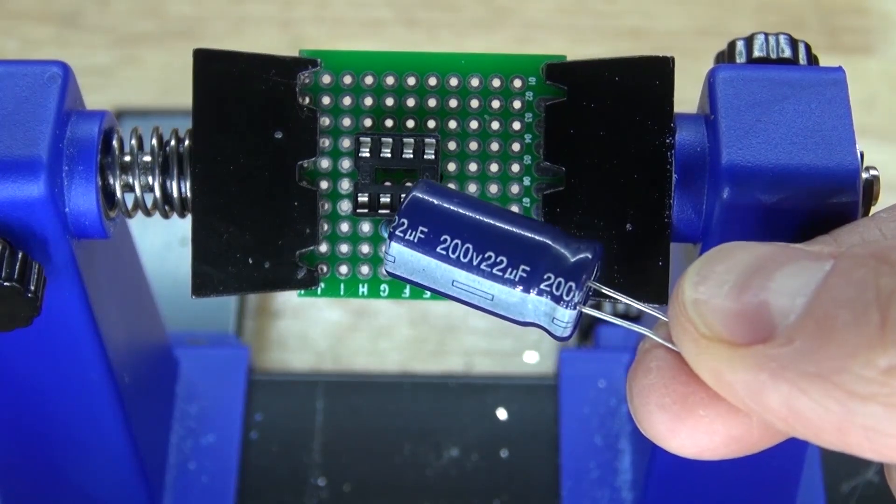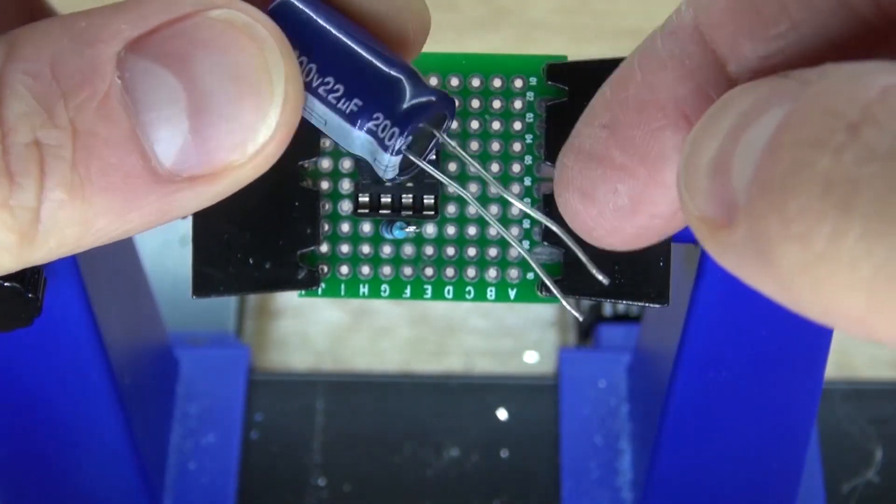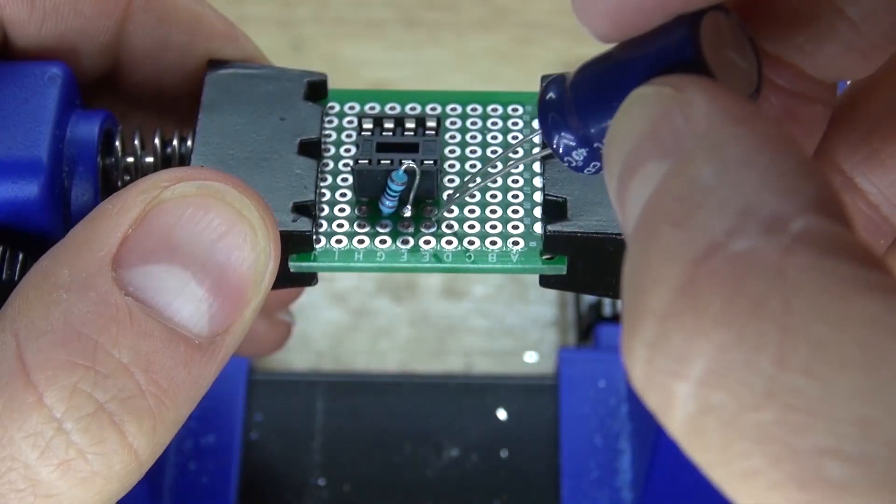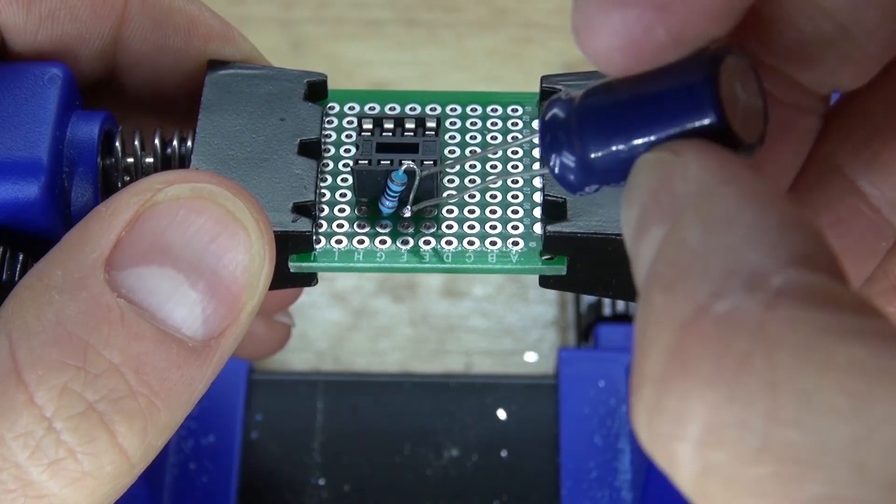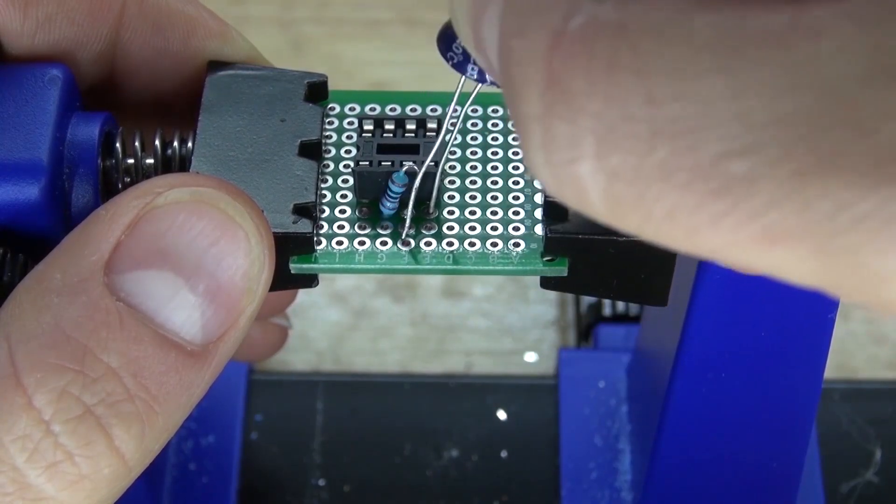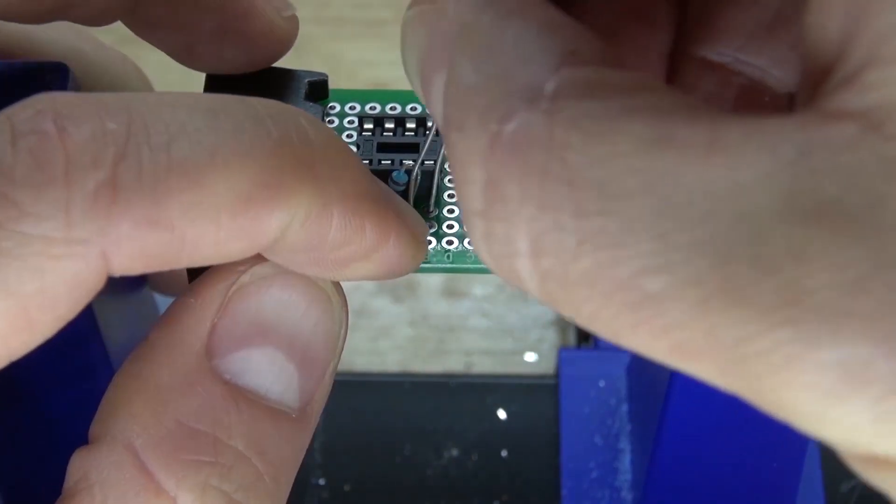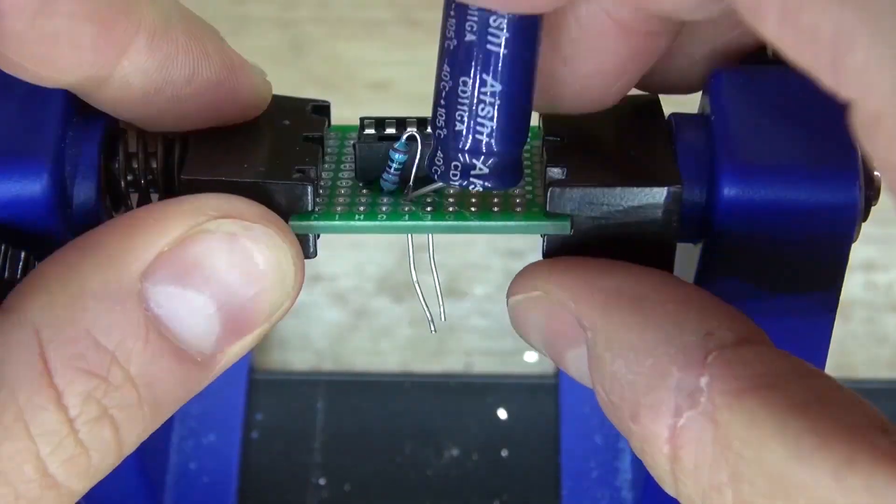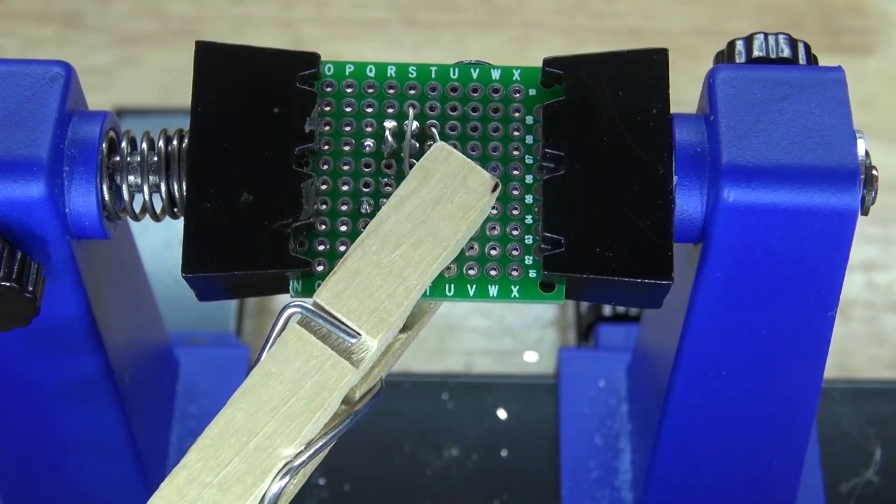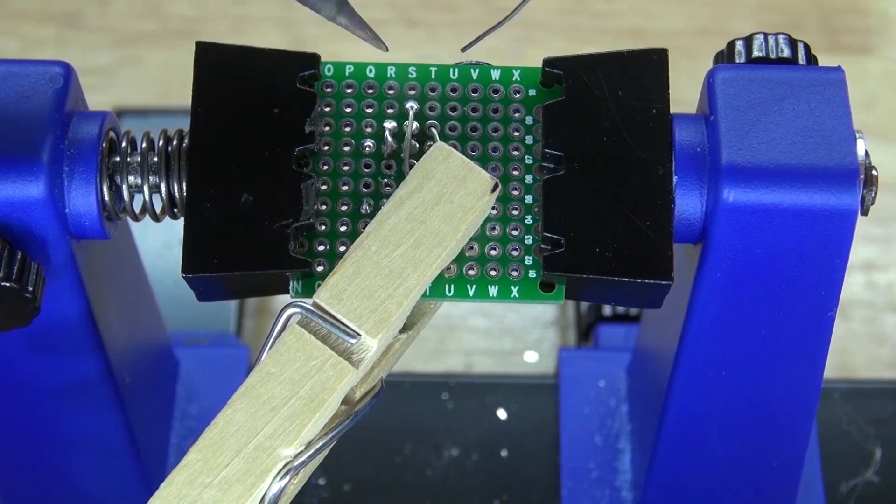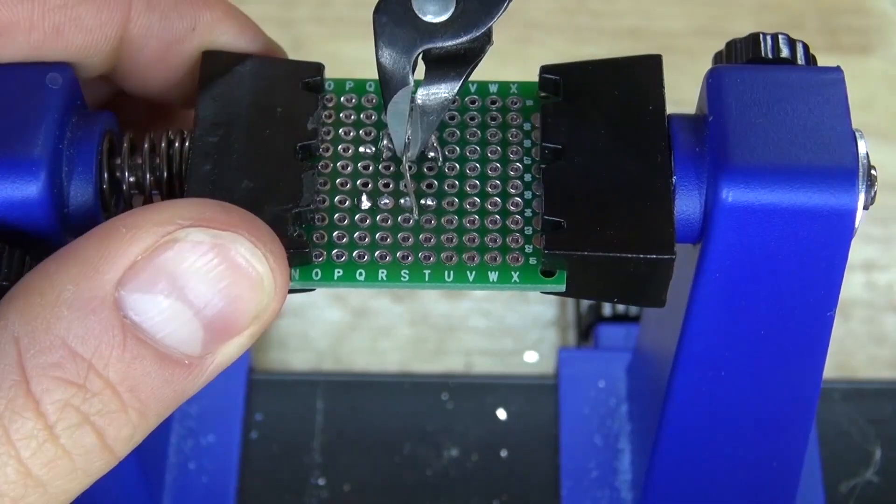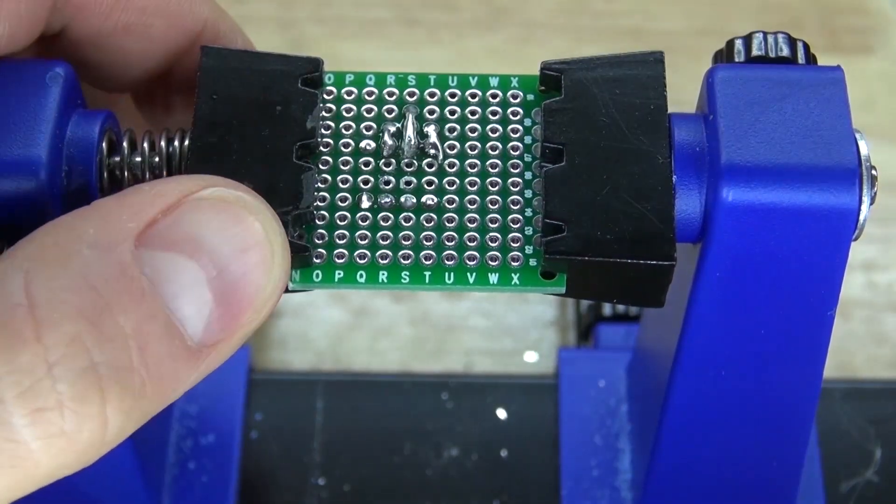Next you're going to need to take your 22 microfarad electrolytic capacitor, where this side is negative and this side is positive. What you need to do is connect the negative to pin 4 and the positive to pin 3. Just like that, push it in and bend it over. Bend over the leads so you can solder bridge them together. Cut off the leads and it should look just like this.